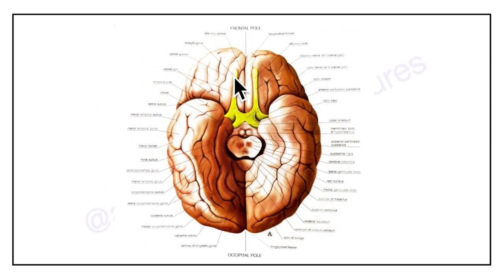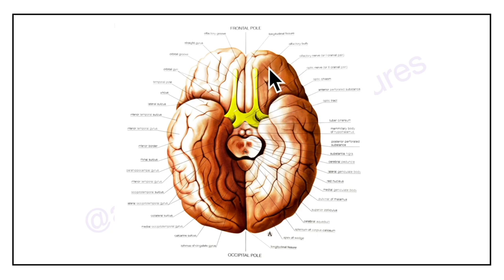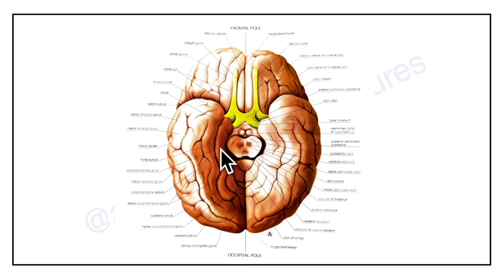In this picture we can see the inferior aspect of the cerebrum. Here we can see the third surface of the cerebral hemisphere — the inferior surface. The inferior surface is irregular. It is divided into an anterior part called the orbital surface and a posterior part called the tentorial surface. These two parts are separated by a deep cleft called the stem of the lateral sulcus.